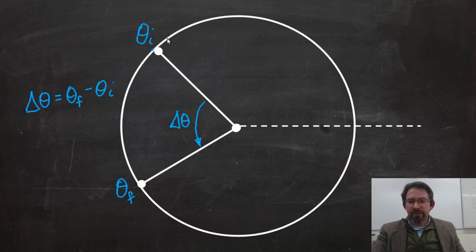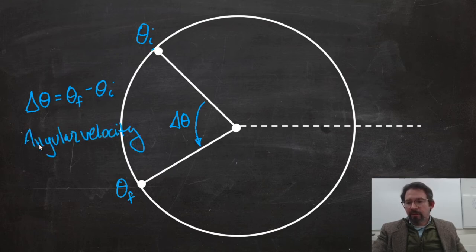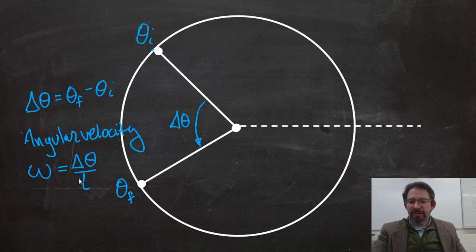Now this might remind you of ways that we measured position in the past, and in fact there are many correspondences between this way of measuring angle and the way we've measured position and velocity in the past. We could say that the time it takes to go from theta initial to theta final is t, and then we can define a velocity that's the change in angle. We call that angular velocity, and that's generally measured in radians per second. And we use the Greek letter omega, which looks like this.